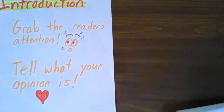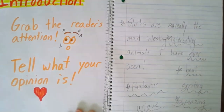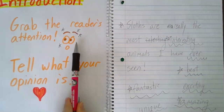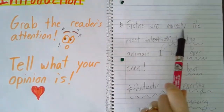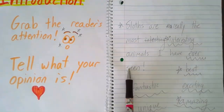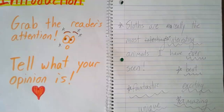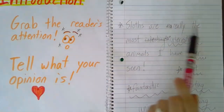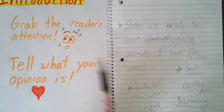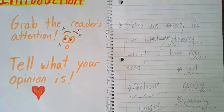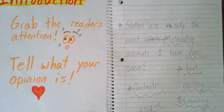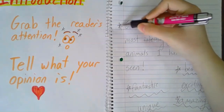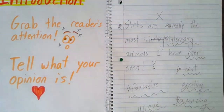Let's take a look at my really strong feeling one. It has to have those two parts — grab the reader's attention and tell what my opinion is. I wrote: 'Sloths are really the most interesting animals I have ever seen.' And that's it, that's all I wrote. So did I grab the reader's attention with a strong feeling? Yes. But did I tell you what my opinion was? Not yet. I didn't write 'sloths are the best animals in the world.' So this one's not done yet — I have a really great strong feeling, but the opinion is missing.